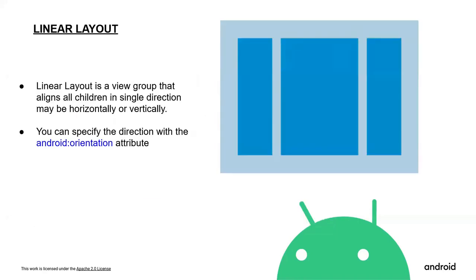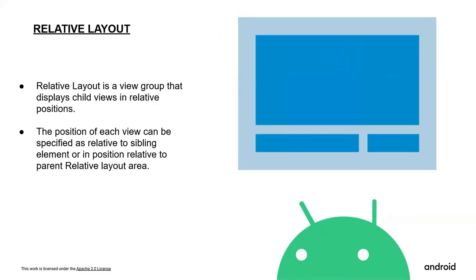Linear layout is a view group that aligns all its children in a single direction — either horizontally or vertically. You can specify the direction using the android:orientation attribute. Relative layout is a view group that displays child views in relative positions. The position of each view can be specified as relative to sibling elements or relative to the parent layout area.